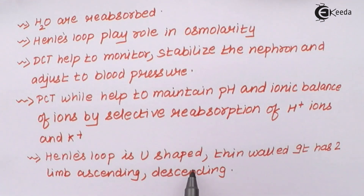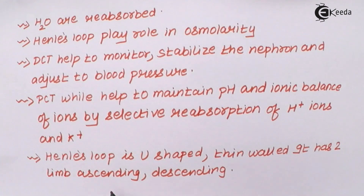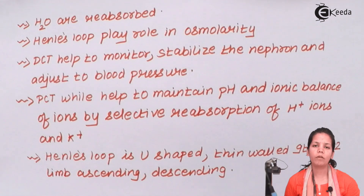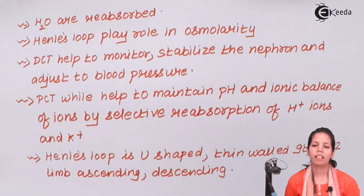Henle's loop is U-shaped, thin-walled, and it has two limbs — ascending and descending. So students, in this part of the chapter we studied about renal tubule. I hope you are very clear with this concept. Thank you.